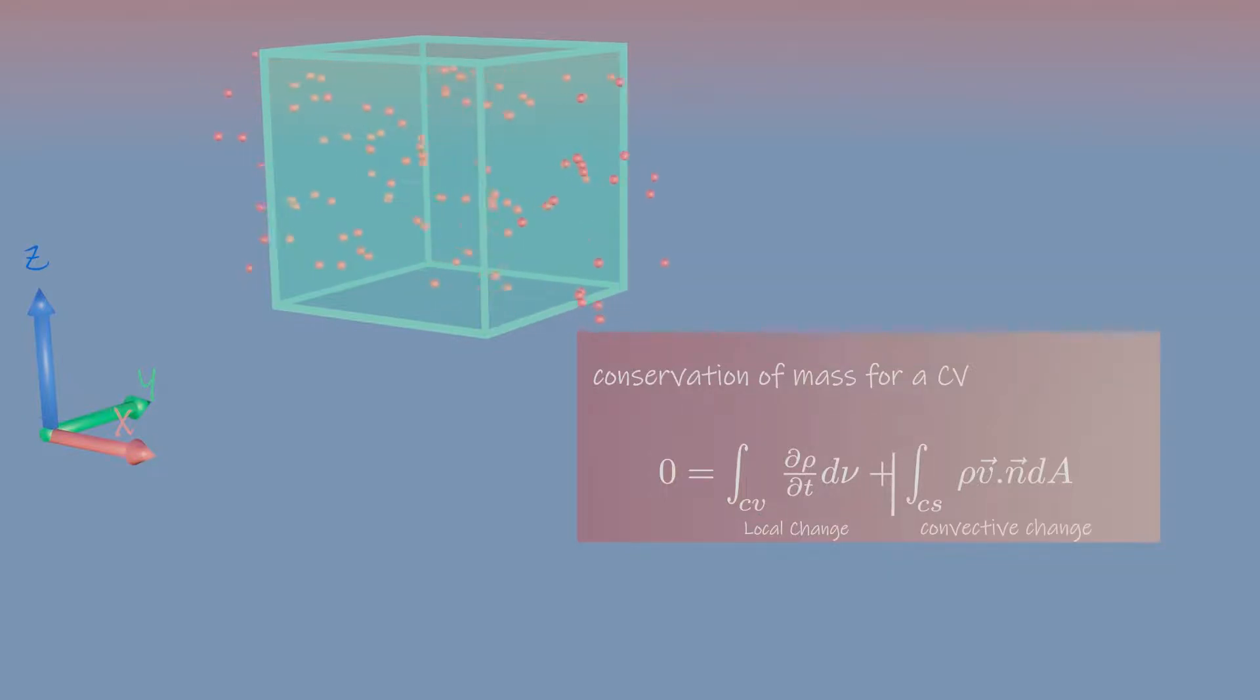The second term on the right is the convective change, since it represents the net flow of the mass through the control surfaces. It is the net convective rate at which mass enters and exits the open control surfaces.